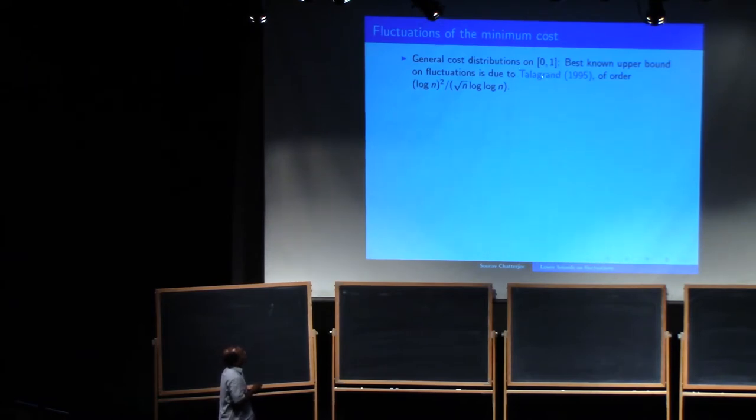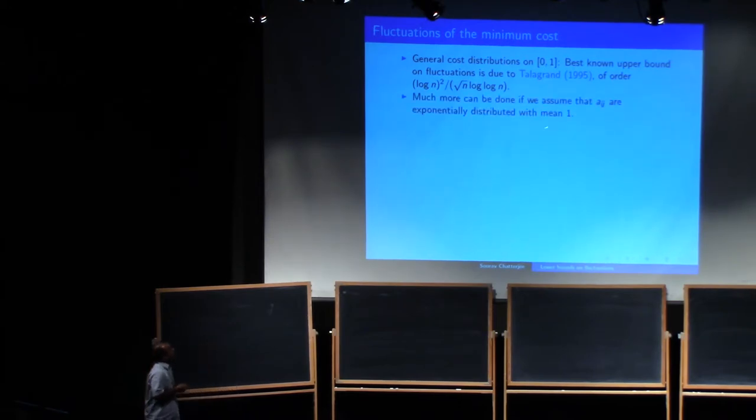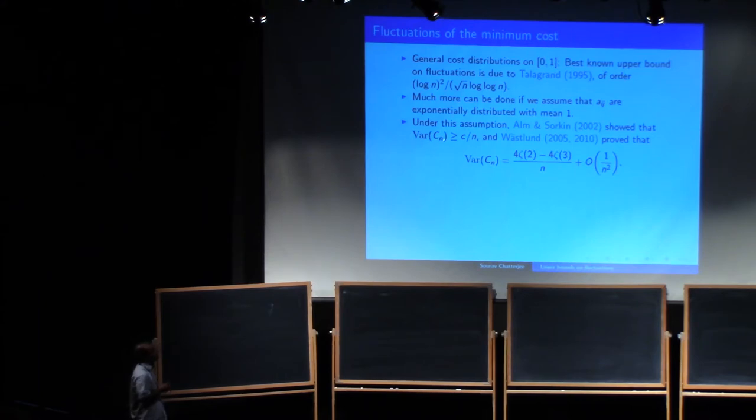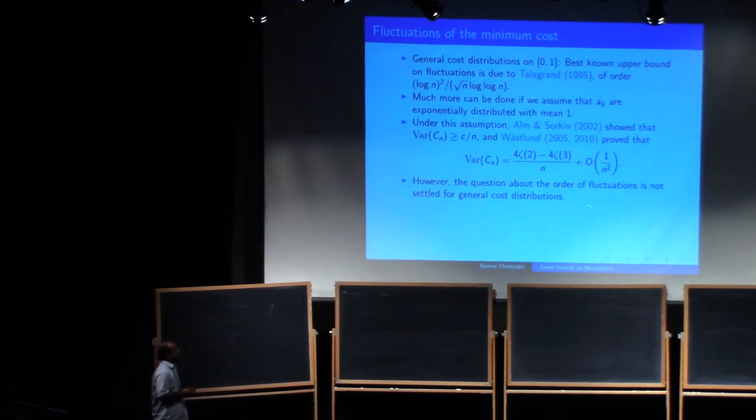So what about the fluctuations? So surprisingly, the best-known upper bound is actually due to Talagrand of order 1 over root n, but with some correction, log n squared over log log n. For general distributions, cost distributions in zero, one. If we assume that these are exponentially distributed with mean one, then more can be done. So it was proved very early on that the variance is at least constant over n if these are exponentially distributed. And Wastlund proved that we got an asymptotic formula for the variance if these are exponentially distributed.